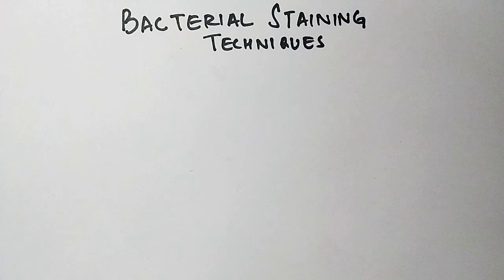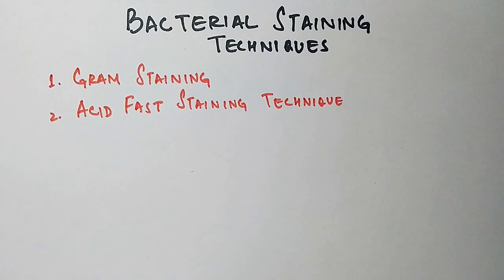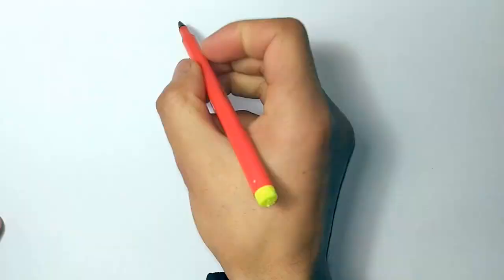There are two main types of bacterial staining techniques: first is gram staining technique and second is acid-fast staining technique. Both are differential staining, and here we will be discussing gram staining technique only.